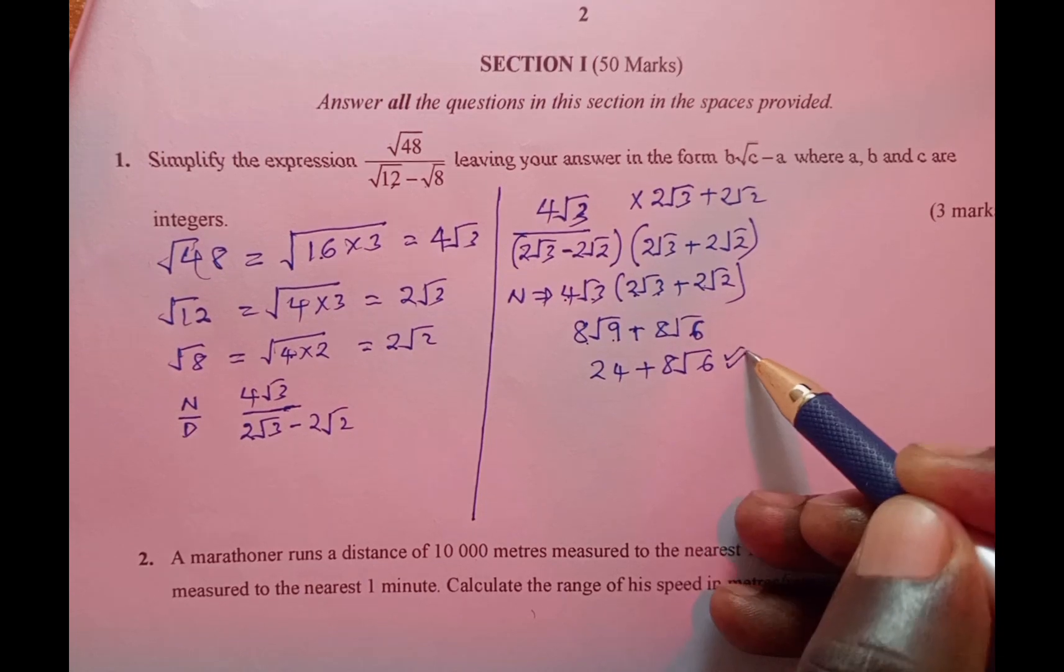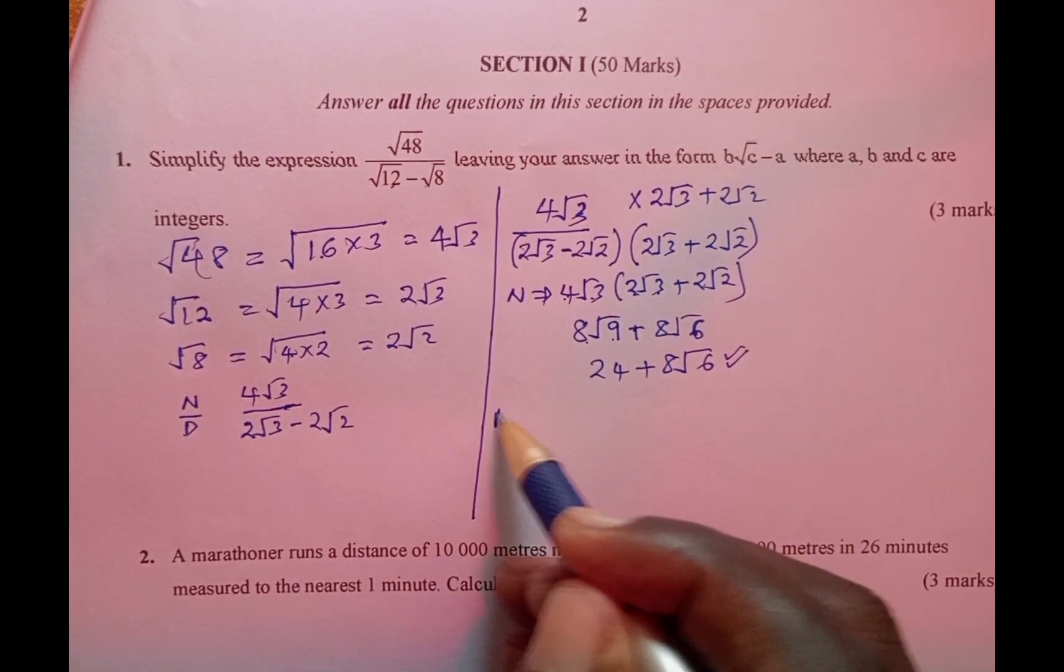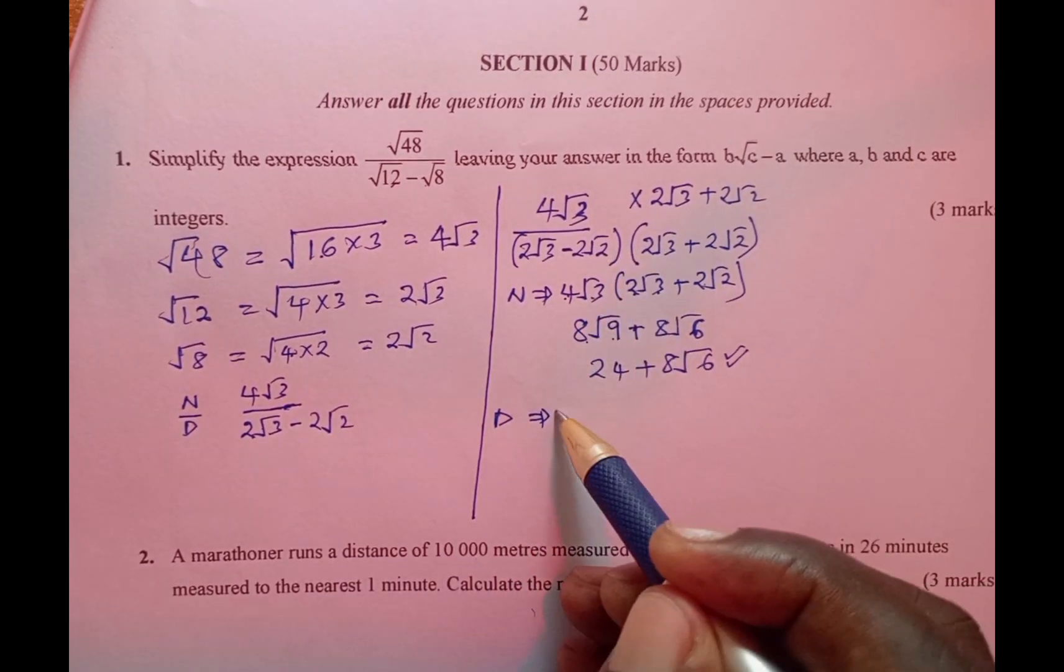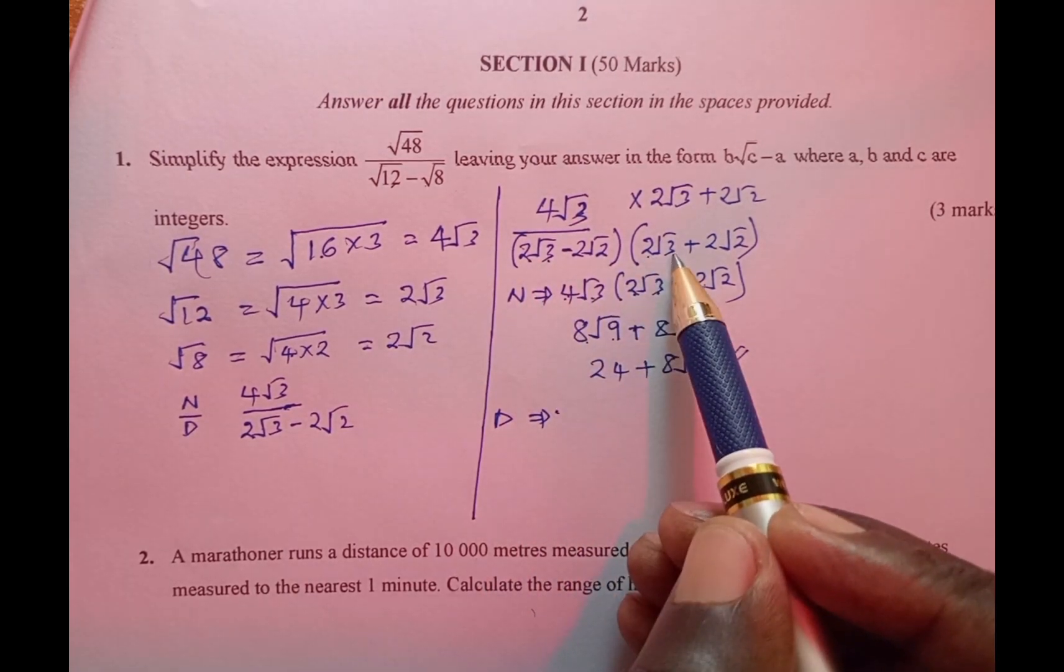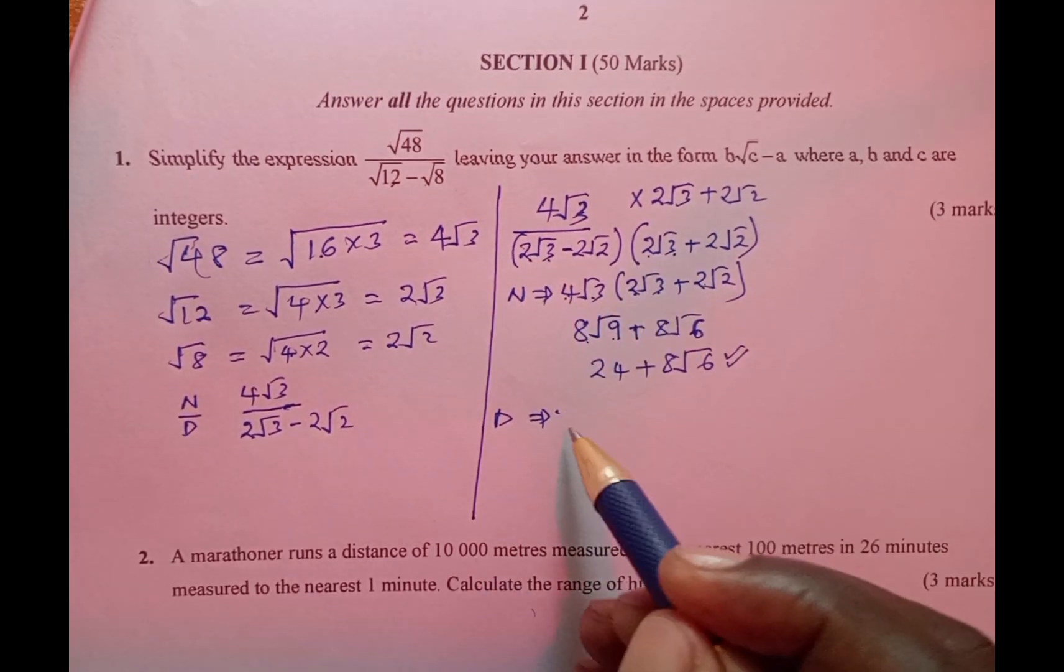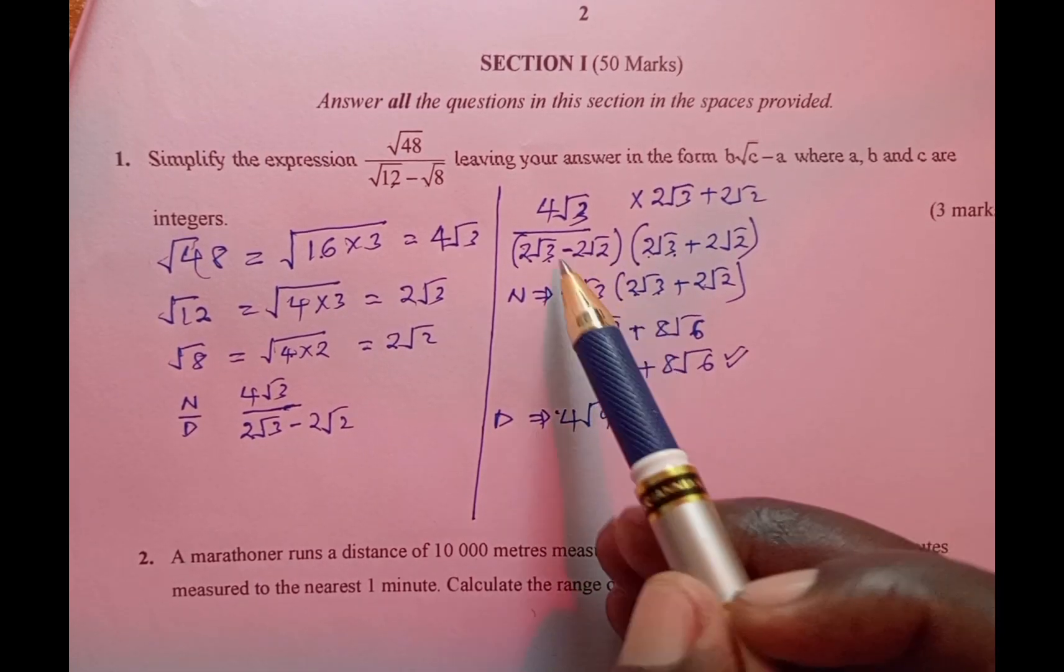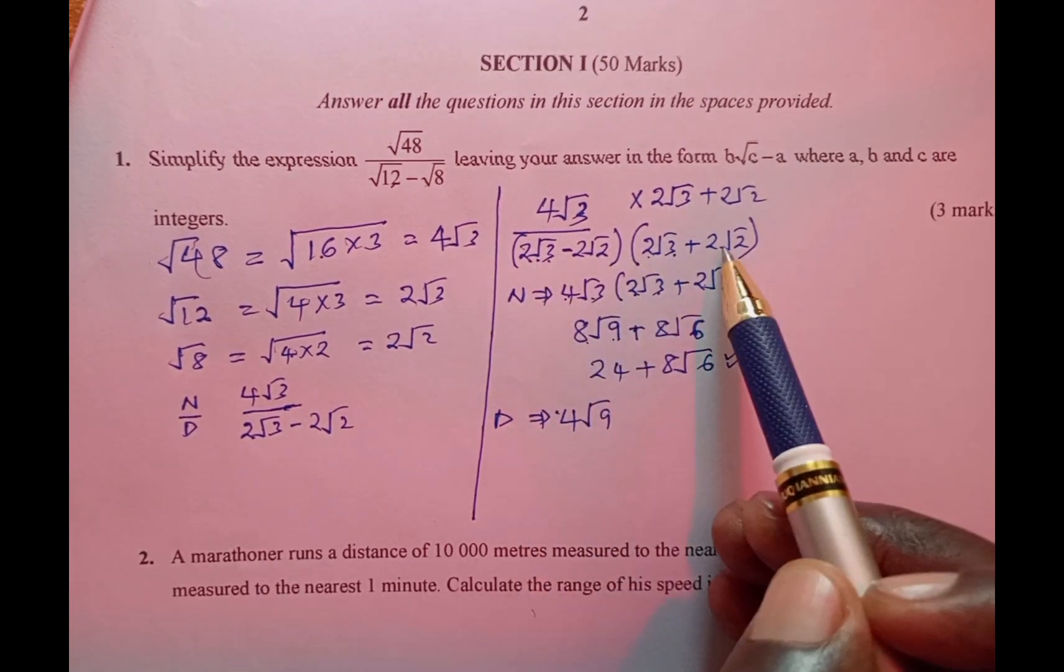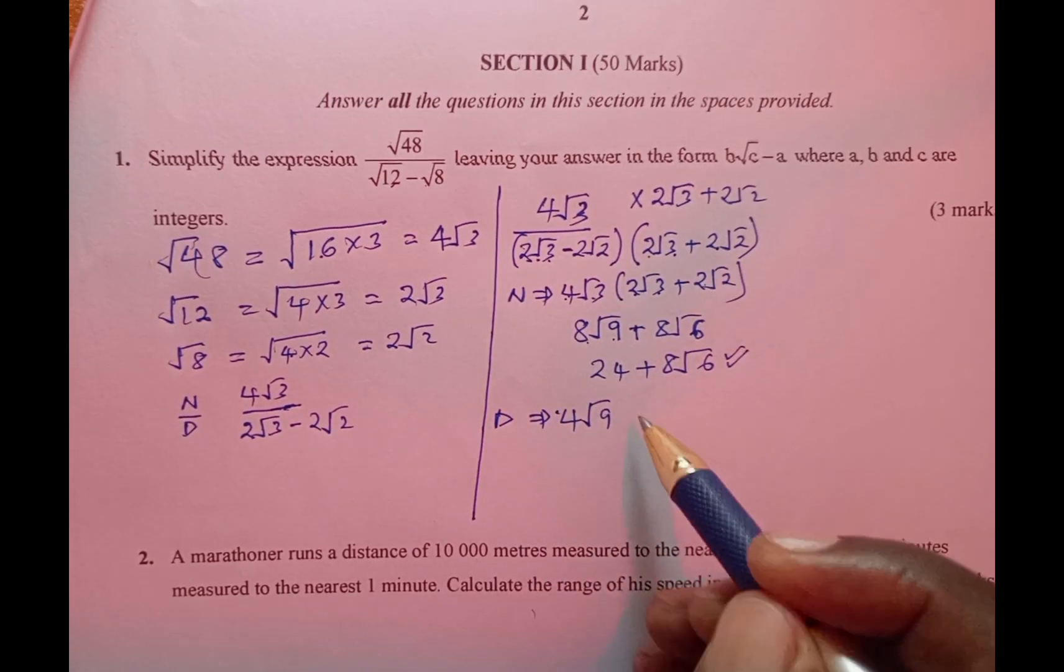Again we go down and work on the denominator. The denominator has 2√3 multiplied by 2√3 giving us 4√9, then we have 2√3 multiplied by 2√2 giving us 4√6.